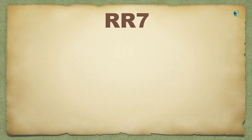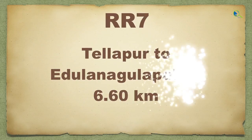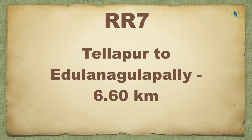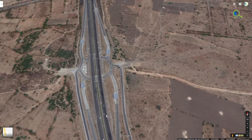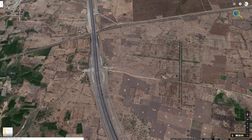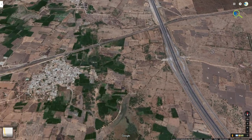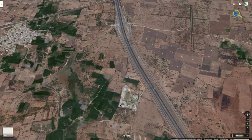Let's talk about what RR7 is. This is the Radial Road. This is the radial road and this stretch is 6.6 km. To start with a basic idea, we need to analyze the map. We have a large map here and we'll go through it.